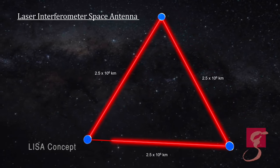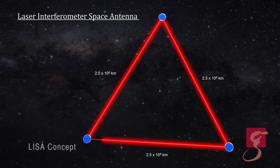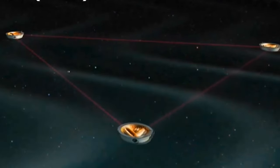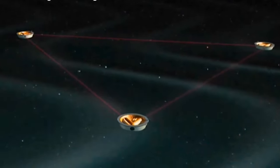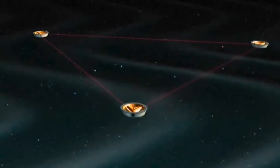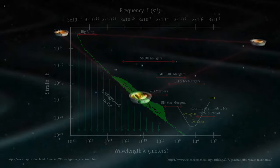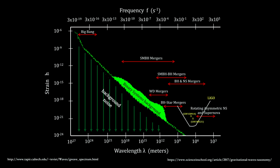Each arm is 2.5 million kilometers long, that's 1.6 million miles. When gravitational waves pass through the triangle, they will produce oscillations in the lengths of its arms, and LISA will capture these changes. This is similar to LIGO, only a million times more sensitive.